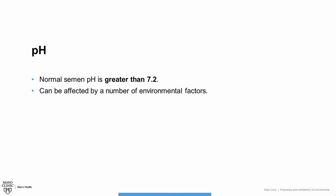Semen pH. A normal semen pH is more than 7.2. Your pH, however, can be affected by a number of environmental factors. It's therefore not a big concern if the pH is not normal. It may, however, tell your doctor to look into something further.